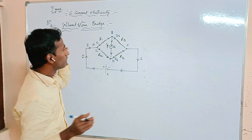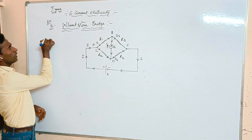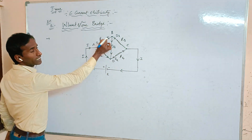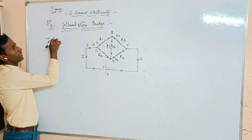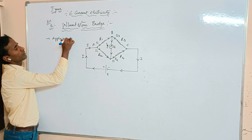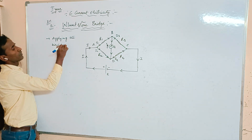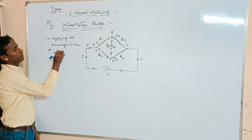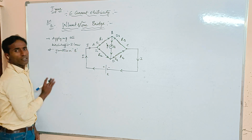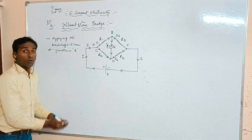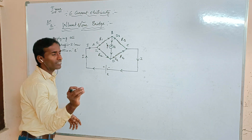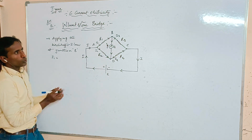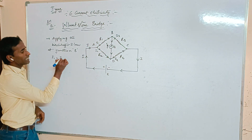Now, applying Kirchhoff's first law at junction B: the junction law states that the sum of currents entering equals the sum of currents leaving. At junction B, current I1 is meeting, so we write: I1 = IG + I3. This is equation number 1.